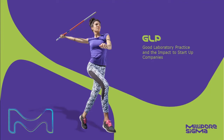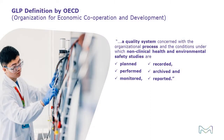GLP — Good Laboratory Practice. The definition of Good Laboratory Practice, GLP, is given by the OECD, Organization for Economic Cooperation and Development: a quality system concerned with the organizational process and the conditions under which non-clinical health and environmental safety studies are planned, performed, monitored, recorded, archived, and reported.